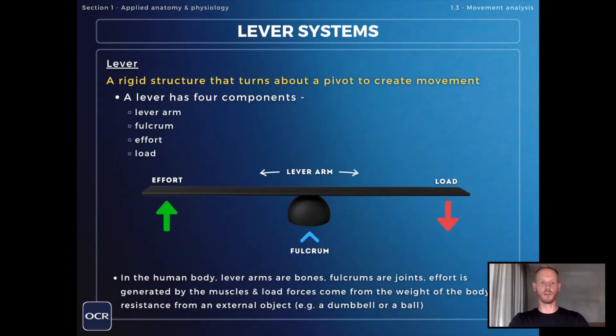So a lever is a rigid structure otherwise known as a lever arm that turns around an axis or pivot to create movement. Levers are made of four different components: the lever arm, fulcrum, effort and load or resistance.